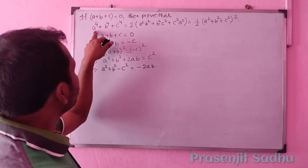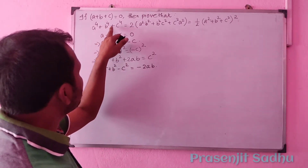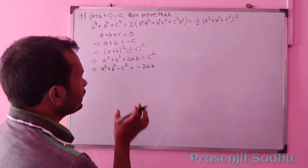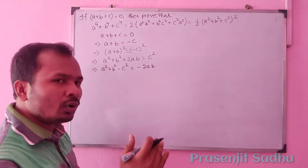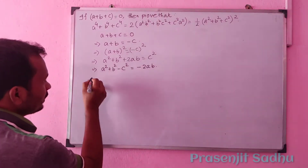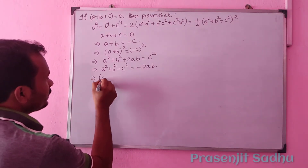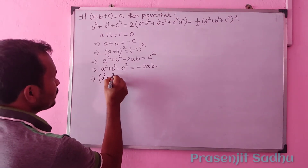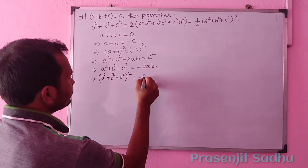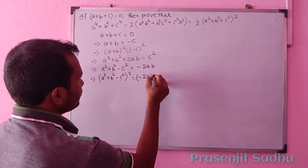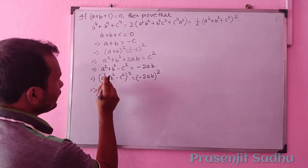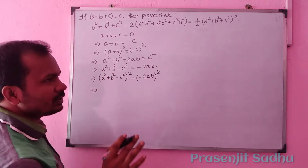Now we have to prove a to the power 4, b to the power 4, c to the power 4. We take the expression a² plus b² minus c² and square both sides. So (a² + b² − c²) whole square is equal to (−2ab) whole square, which gives 4a²b².